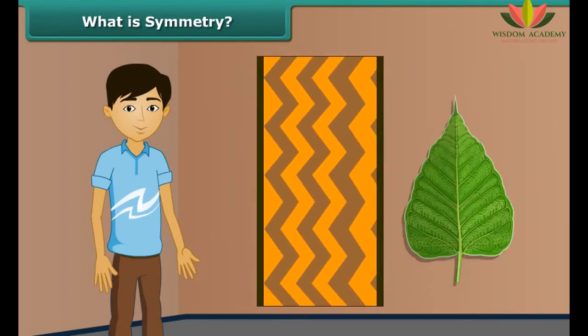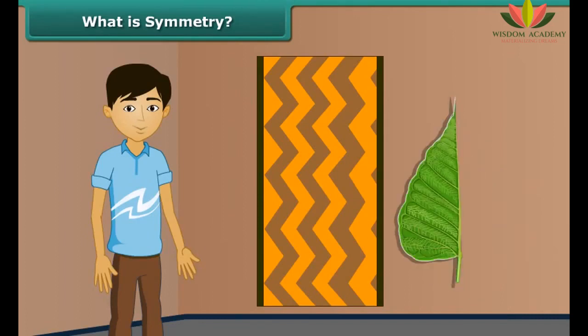Look at this leaf. On folding the leaf, its two halves match each other, thus it is symmetrical.